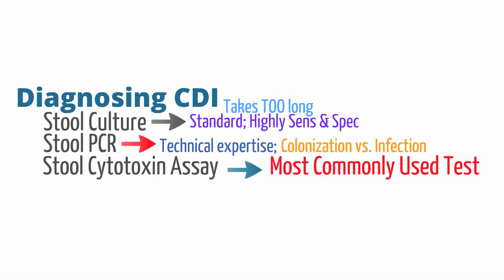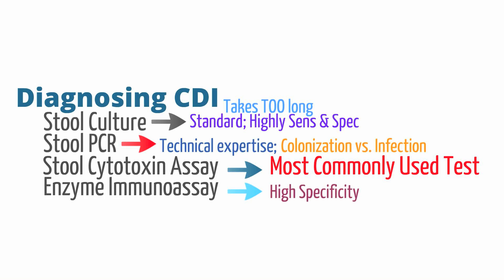Stool cytotoxin assay does identify the toxin produced by C. diff in the stool. It is the most widely used test to identify an active C. diff infection because of its high detection rate for active infections and fast turnaround time. Finally, the enzyme immunoassay can be used as it has moderate specificity and sensitivity, but given there are other more sensitive and specific tests, we generally use this test very infrequently.